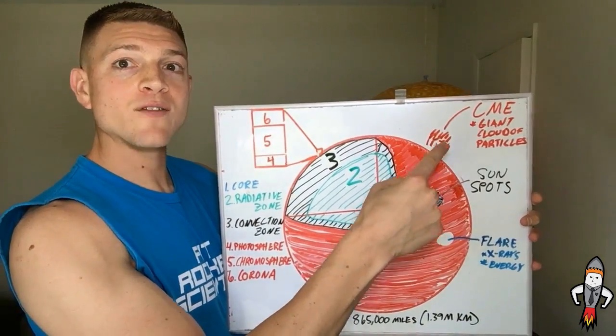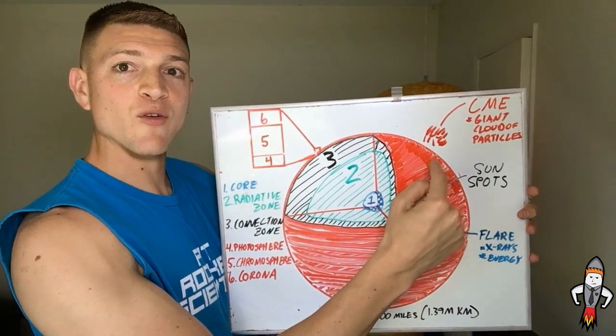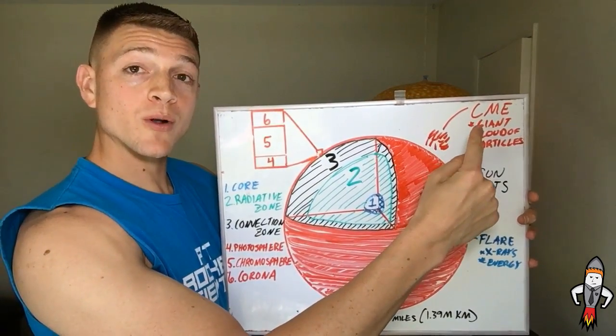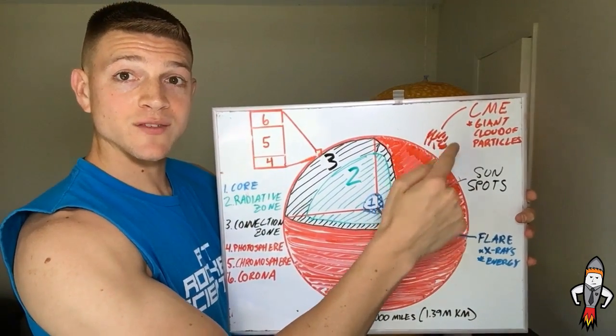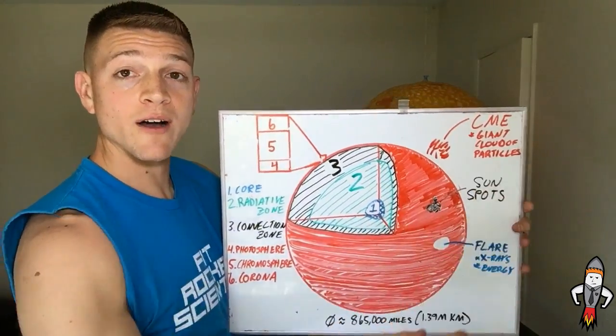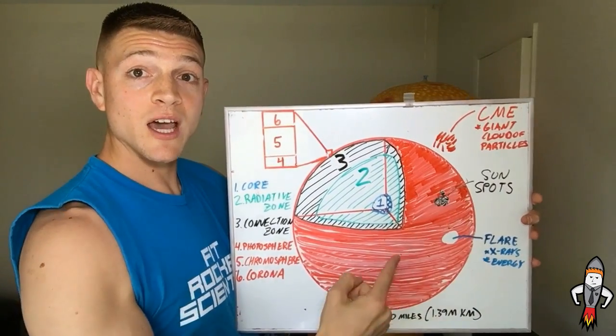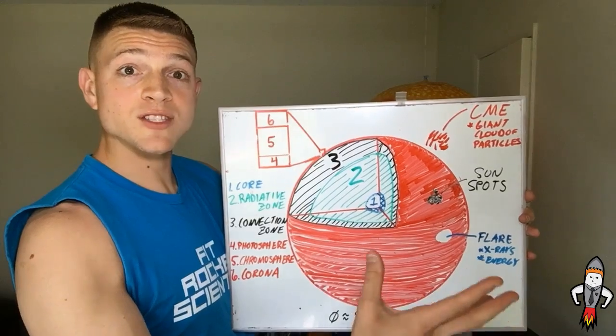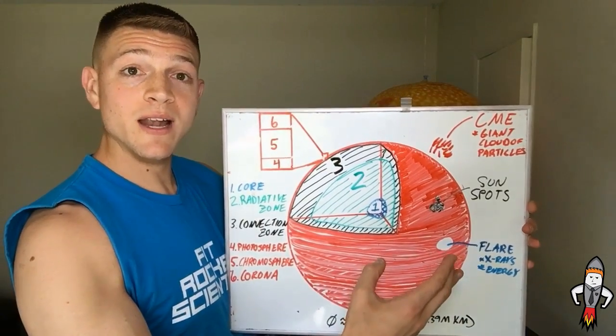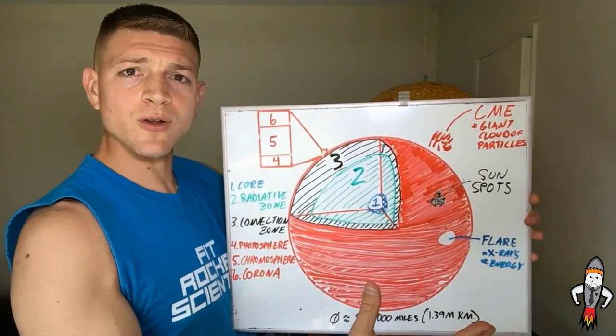And then we have this CME. So this is a big old giant cloud of particles. CME is coronal, because we're in the corona now, mass ejection. So it's a mass ejection of a giant cloud of particles that can spit off. So sometimes the CMEs and the solar flares happen at the same time. They can be part of the same event. Sometimes they happen independent of each other and they both affect Earth in different ways.